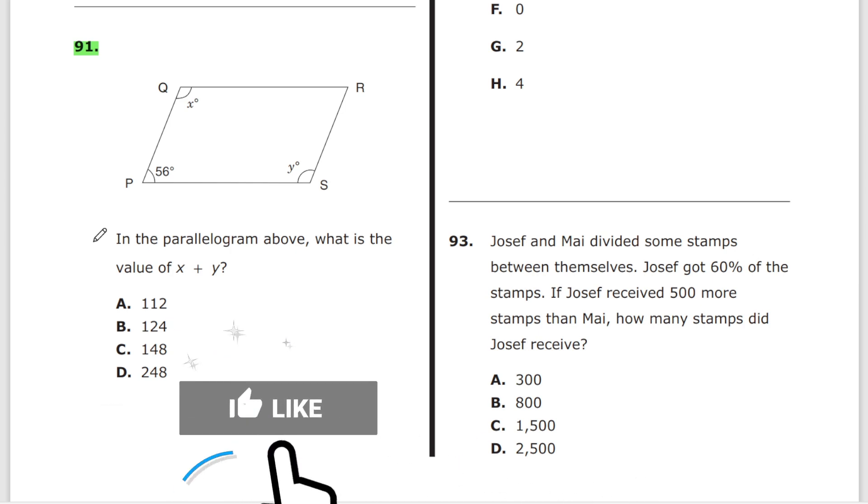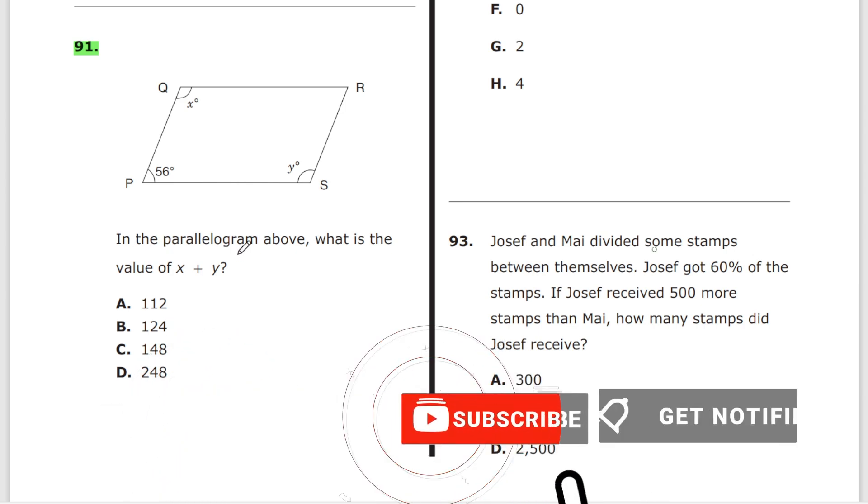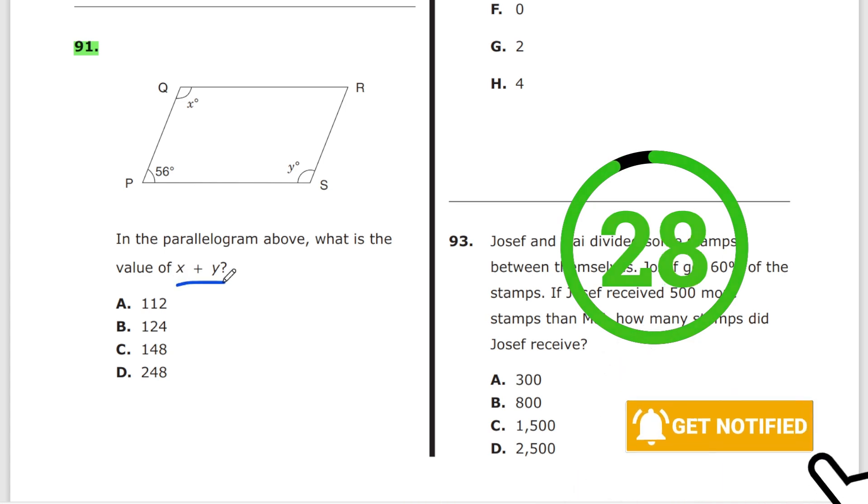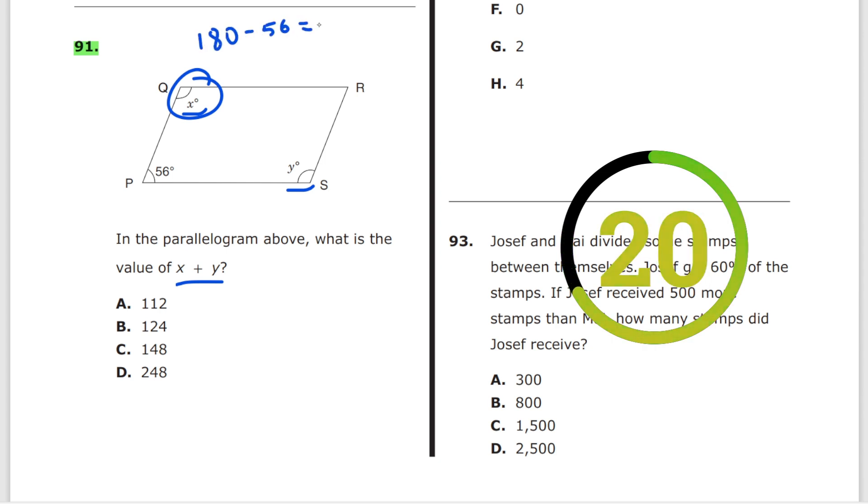How can you do this problem in 30 seconds or less? In the parallelogram above, what is the value of x plus y? These two angles - x is equal to 180 minus 56, which is